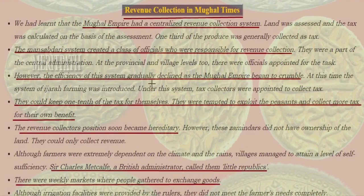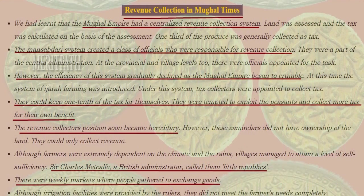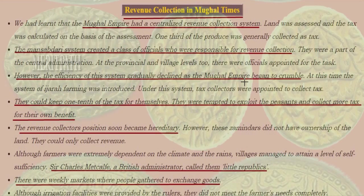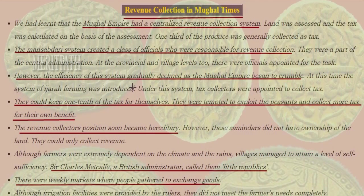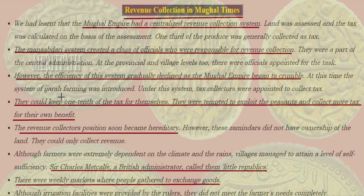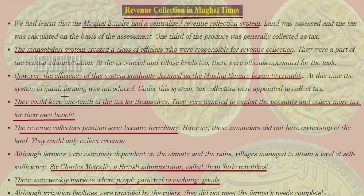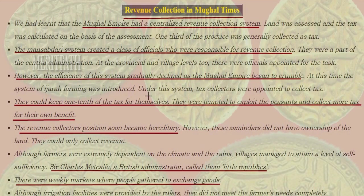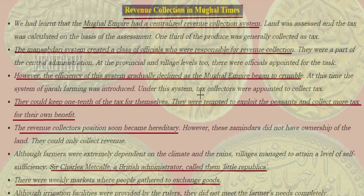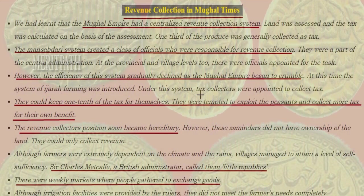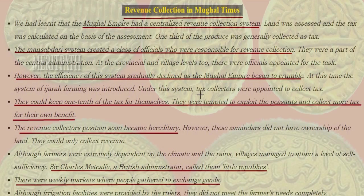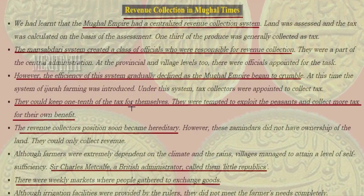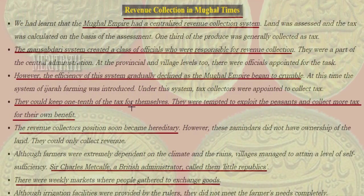At the provincial and village levels too, officials were appointed for the task. However, the efficiency of this system gradually declined as the Mughal Empire began to crumble. At this time, the system of Ijara farming was introduced.